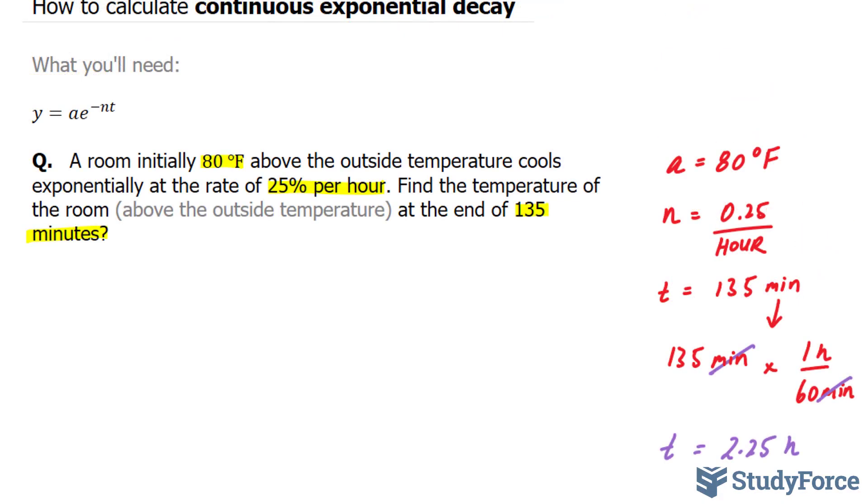Let's plug in this information into the formula. We have y is equal to 80 times e, Euler's number, to the power of negative 0.25, that's our rate, times t of 2.25.